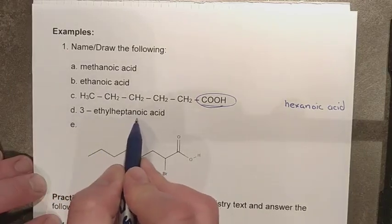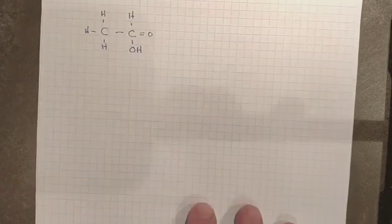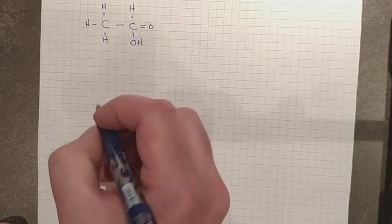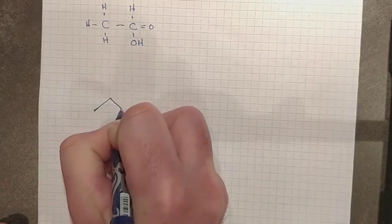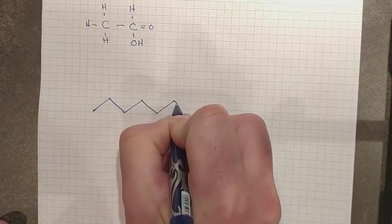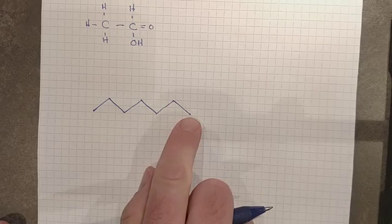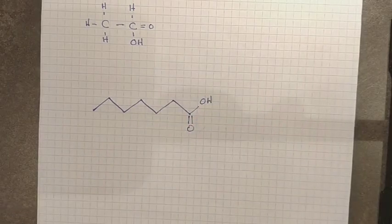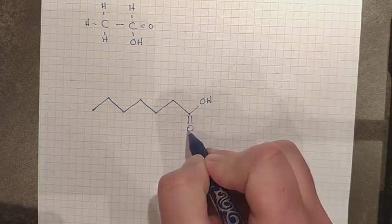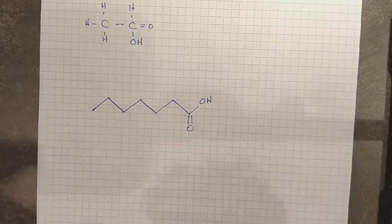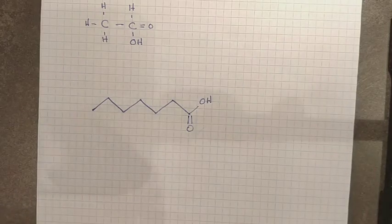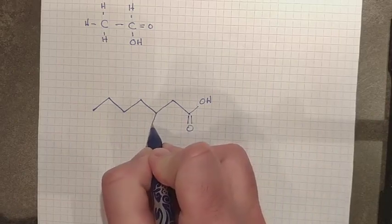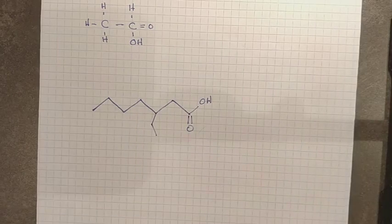For the next example, we have 3-ethyl heptanoic acid. Hept means seven, so it's a fairly long carbon chain. Draw out the seven-carbon chain, add the double bond O and OH on the terminal carbon — that's carbon one. In a line angle diagram, remember that any letter other than C represents that specific atom. Count to carbon three and attach the ethyl group there. That gives you 3-ethyl heptanoic acid.